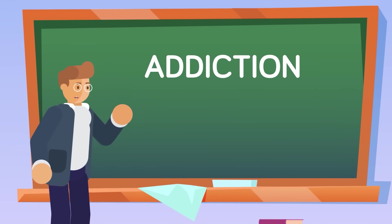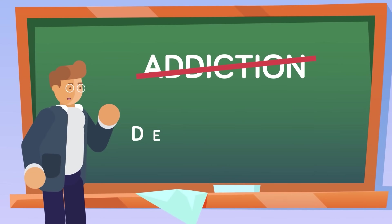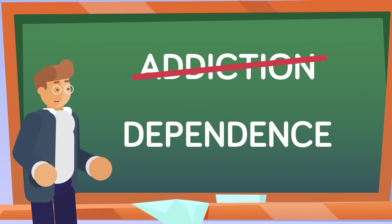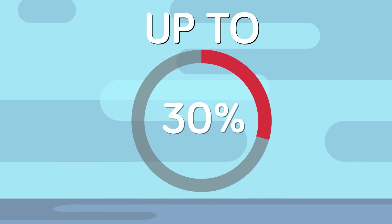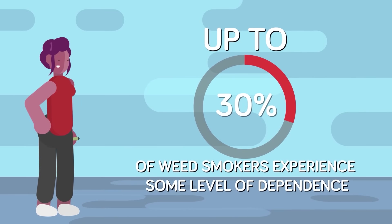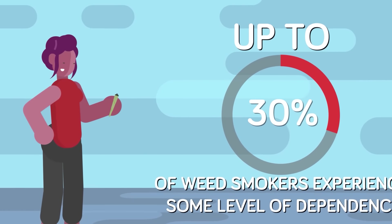That's because what we've described here isn't an addiction, it's dependence. It's very common, and can be broken fairly quickly. Up to 30% of weed smokers experience some level of dependence, and it can be overcome by just taking an extended break and giving your brain some rest.